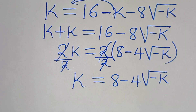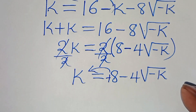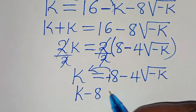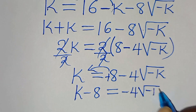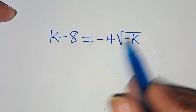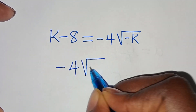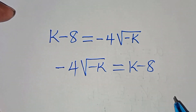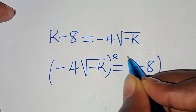The next step is to take 8 to the left hand side, so that we have k minus 8 equals minus 4 times the square root of minus k. We can write this equation as minus 4 times the square root of minus k equals k minus 8. Now let's square both sides.